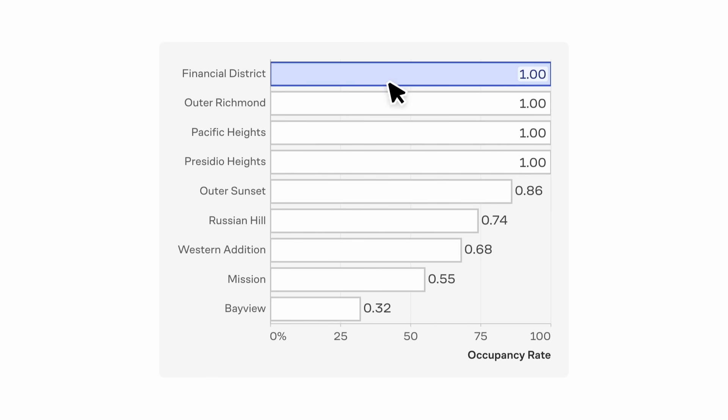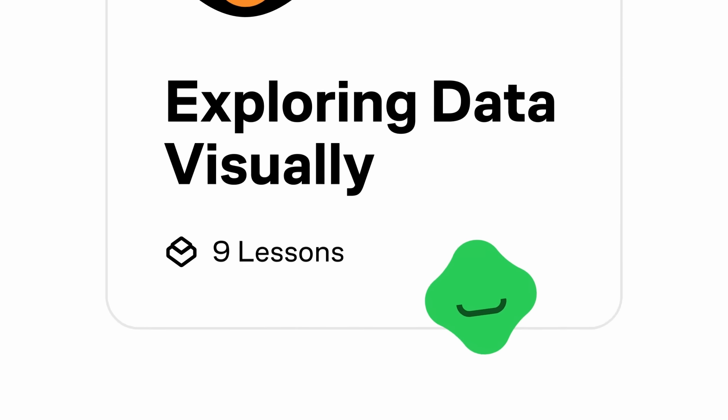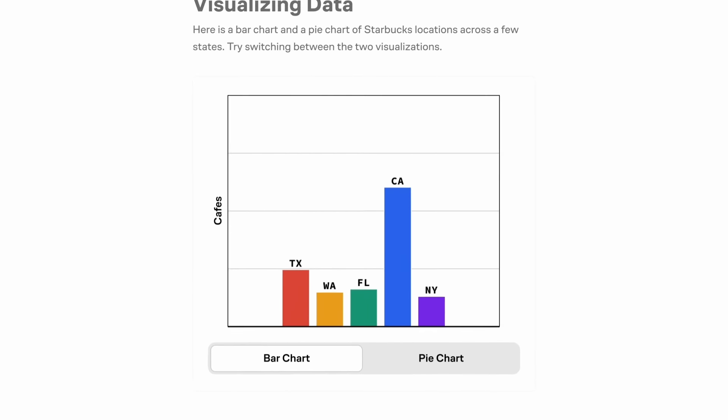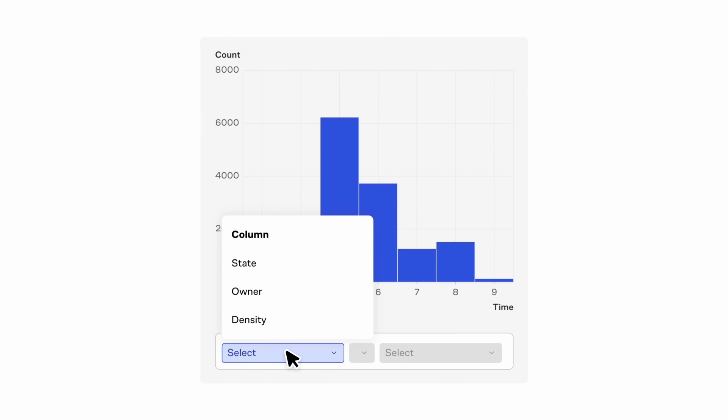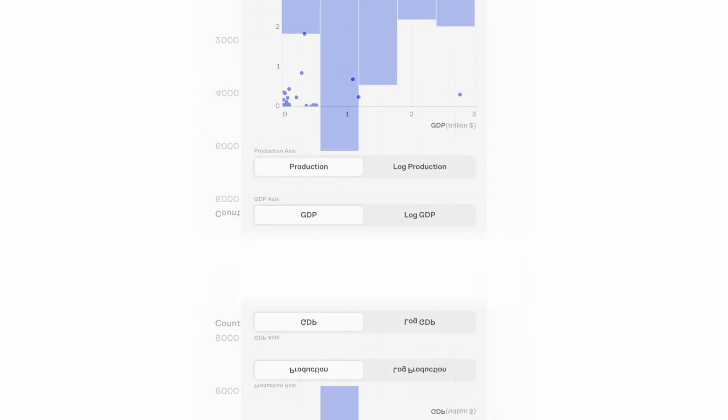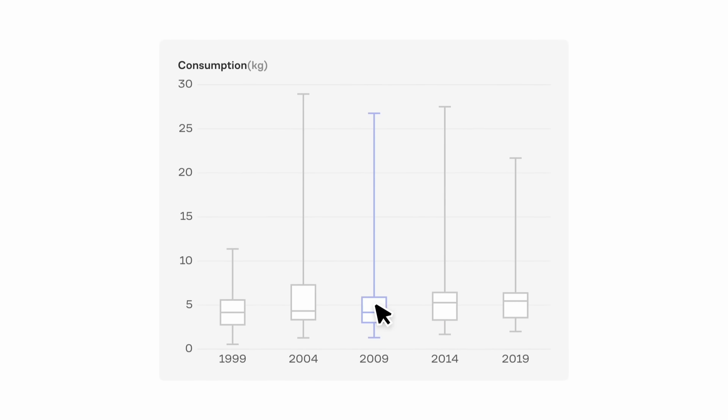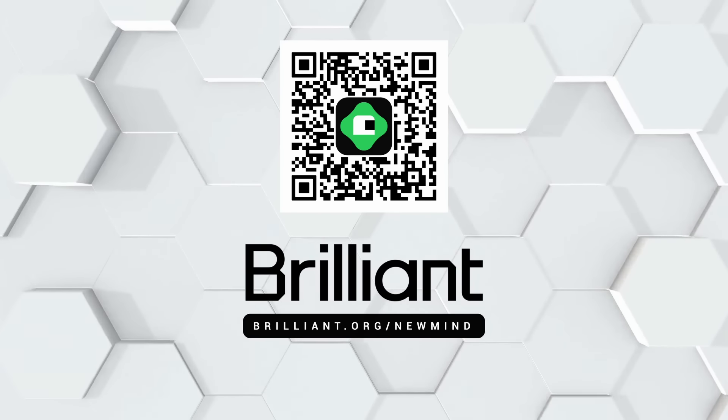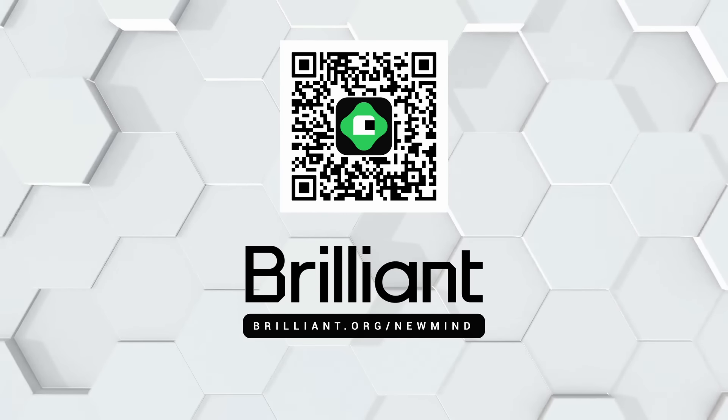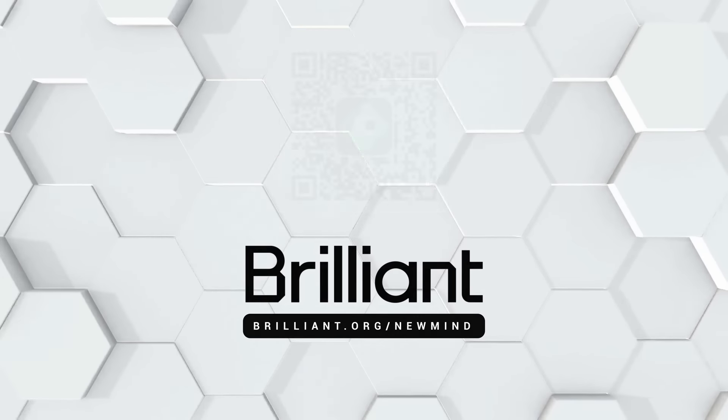Say goodbye to mindless scrolling, and hello to more fulfilling ways of spending your free time. A great starting point I highly recommend is Brilliant's Exploring Data Visually course. In this series of lessons, you'll learn to combine information from multiple sources to make great decisions using data modeling and solid visualization and analysis techniques based on a strong mathematical foundation. To try everything Brilliant has to offer for free for a full 30 days, visit brilliant.org forward slash newmind or click on the link in the description below. You'll also get 20% off an annual premium subscription.